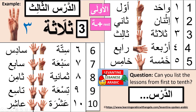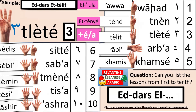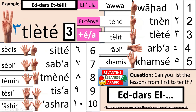Now can you list the lessons from the first to the tenth? We can say: الدرس الأول، الدرس التاني، الدرس التالت، الدرس الرابع، الدرس الخامس، الدرس السادس، الدرس السابع، الدرس التامن، الدرس التاسع، الدرس العاشر — so from the first to the tenth.